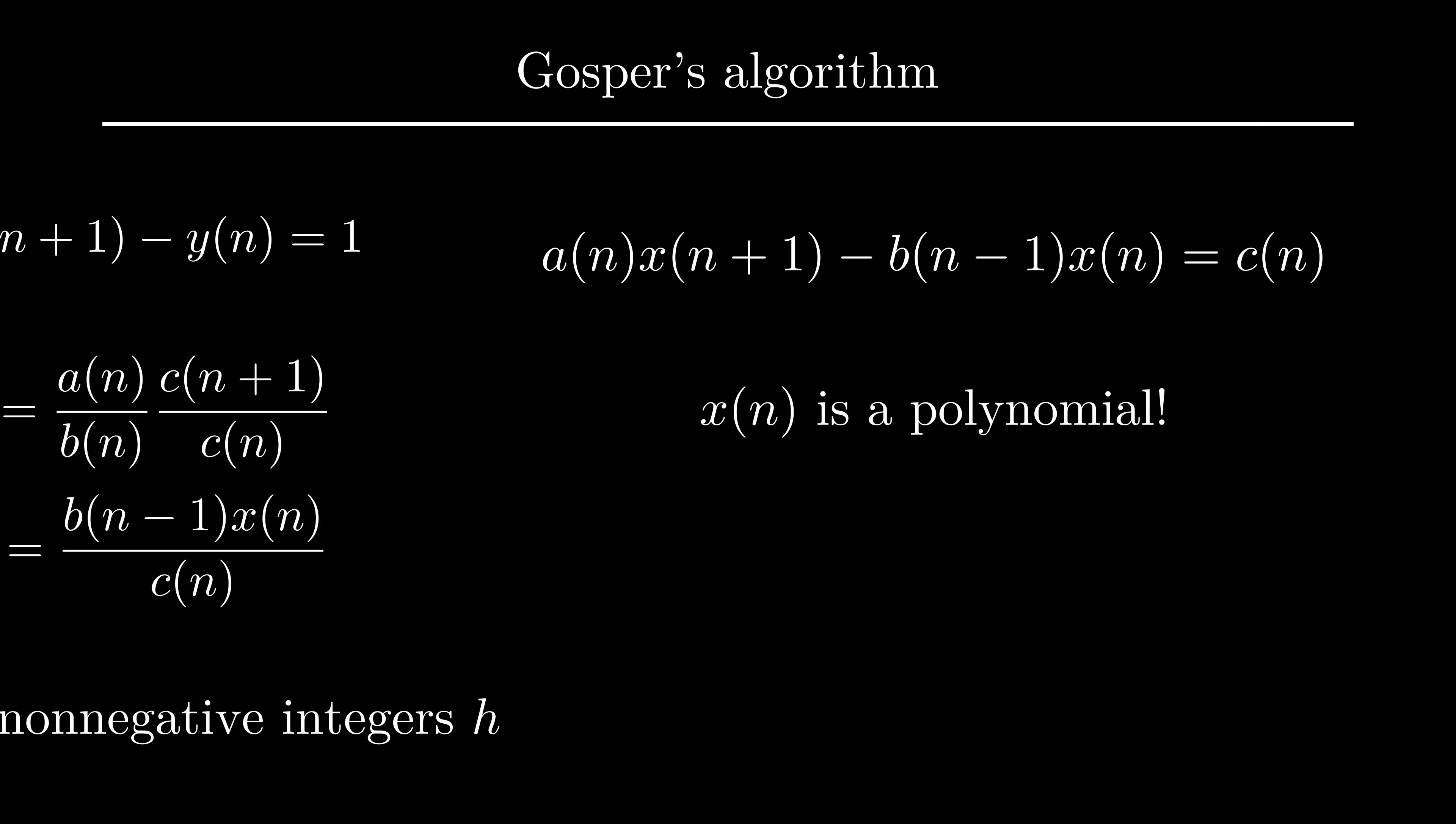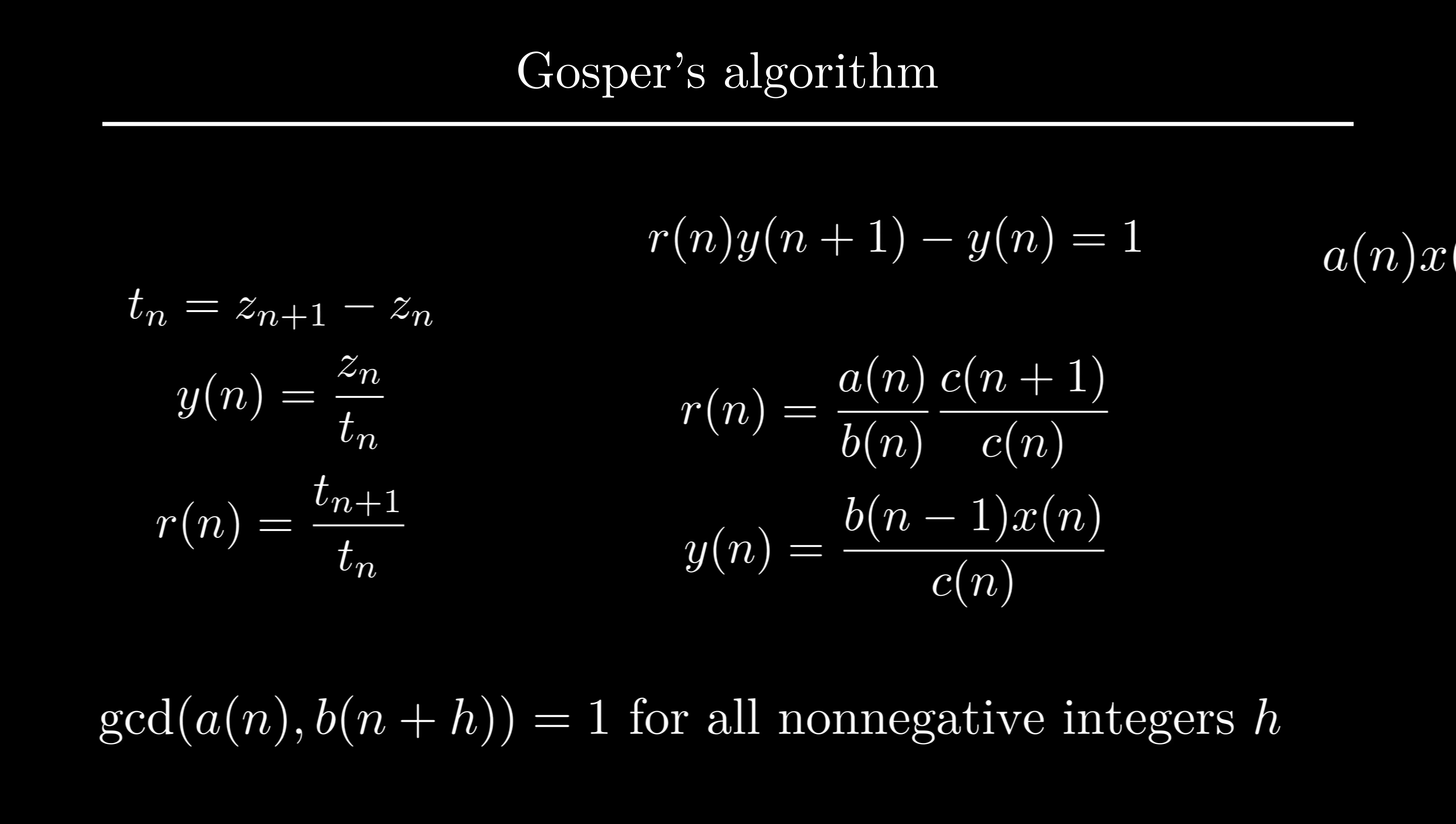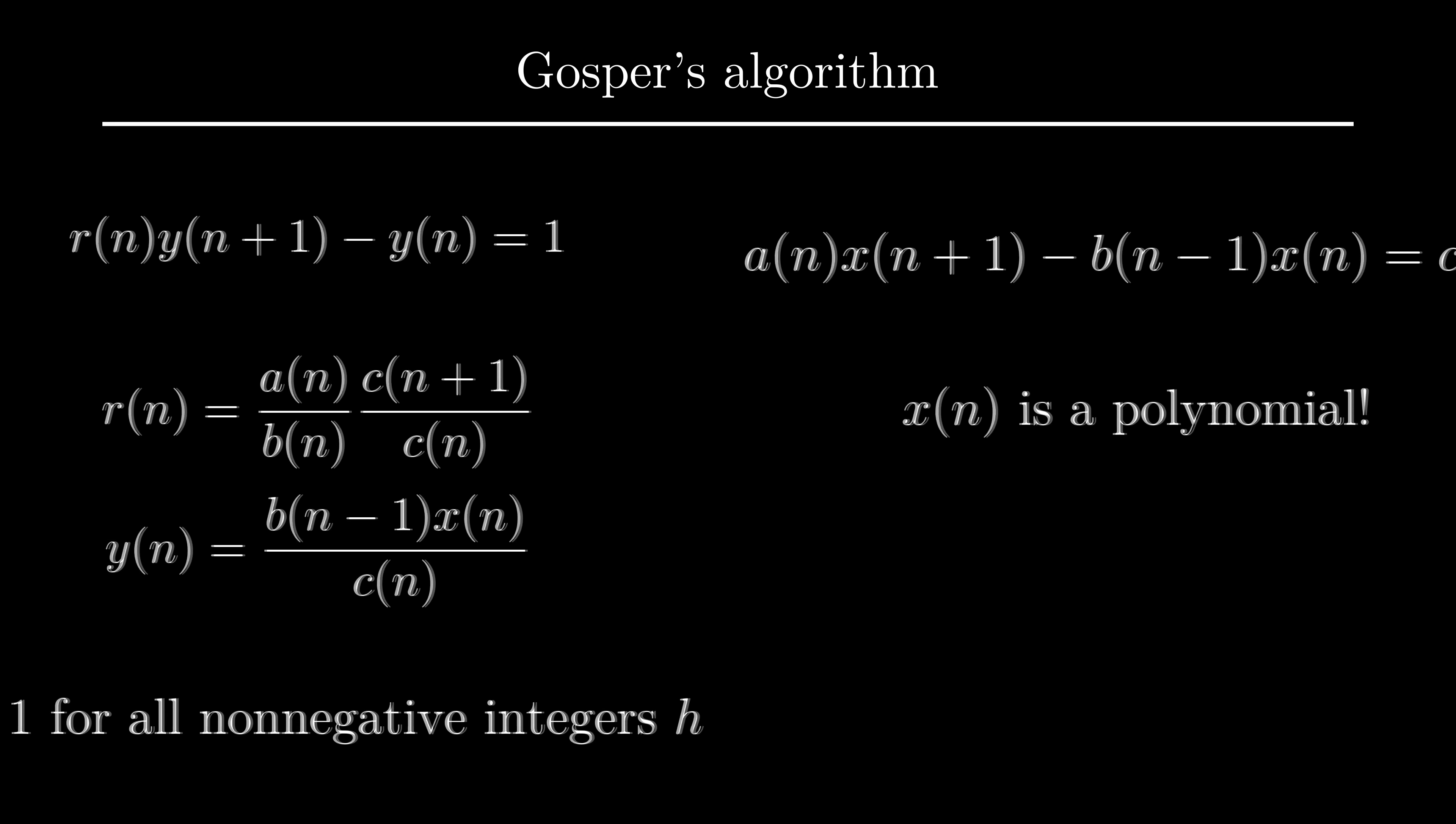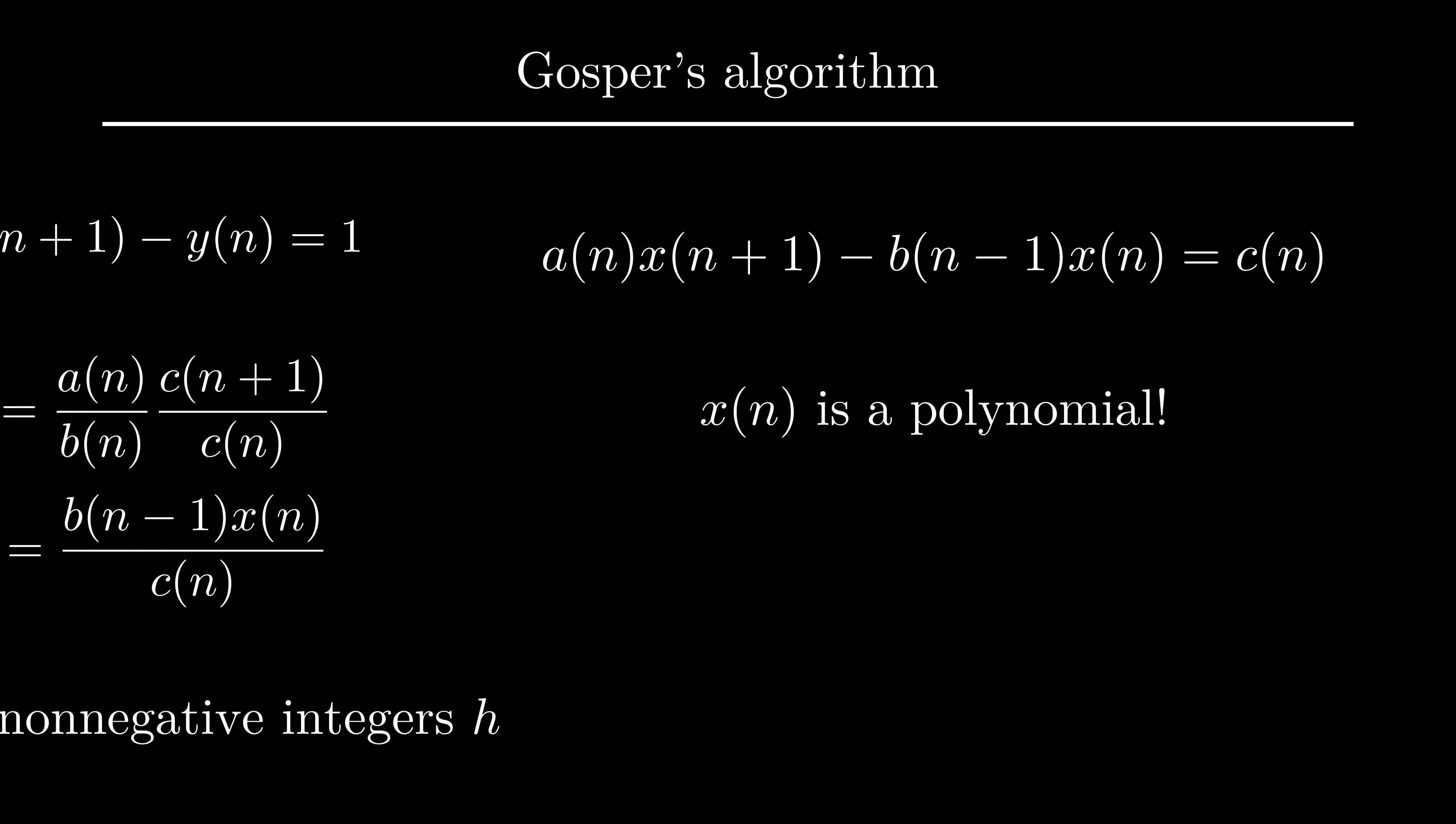So to summarize Gosper's algorithm, we just use these definitions to find r, then the polynomials a, b, and c, and then we will have a recurrence relation for x, which, once we solve, we can substitute back to get our z.